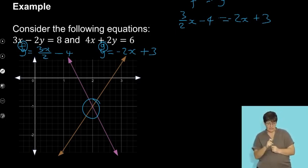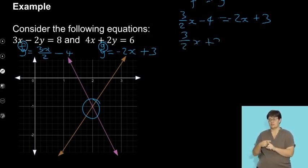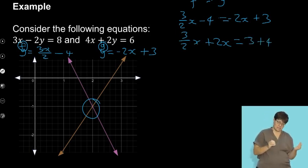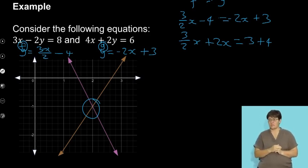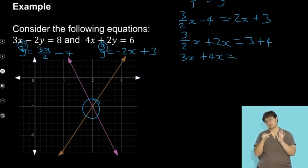If I solve the x, it will be 3 over 2x plus 2x is equals to 3 plus 4. So I took the x to the left hand side, the constants to the right hand side. And then I will multiply everything by 2 in order to get rid of the fraction, which will be 3x plus 4x equal to, this will be 7 multiplied by 2, it will be 14. So this will be 7x equals to 14, then my x will be equals to 2.